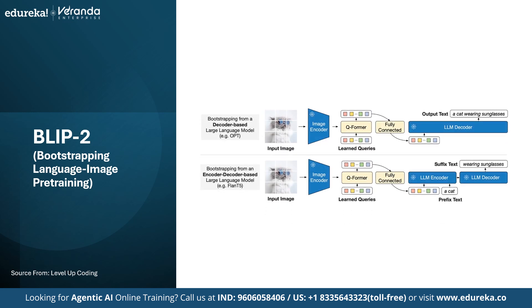The second model is BLIP-2, which stands for Bootstrapping Language-Image Pretraining. It connects a frozen vision encoder — for example CLIP or ViT — with a frozen large language model. A Query Transformer (Q-Former) acts as a bridge, converting visual features into a language-friendly representation. The AI first looks at the image and turns it into features like objects, color and shapes. The Q-Former takes those visual features and converts them into a format the language model can understand. The large language model then reasons about the image features just like it reasons about text, and finally generates a text answer or caption. In short: the vision encoder sees, Q-Former translates, and the LLM explains.